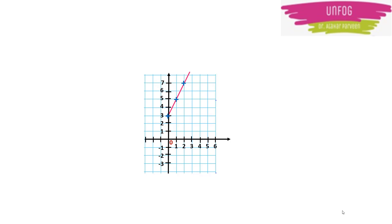So what is the equation of the straight line here and how are the variables related? That is, y is equal to 2x plus 3. So here y and x are the variables which are related such that y is equal to 2x plus 3.